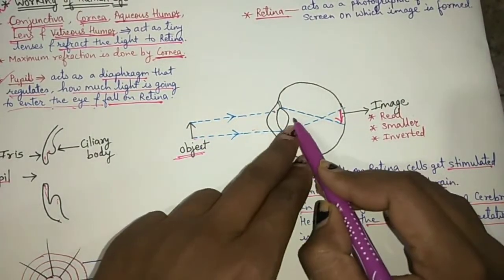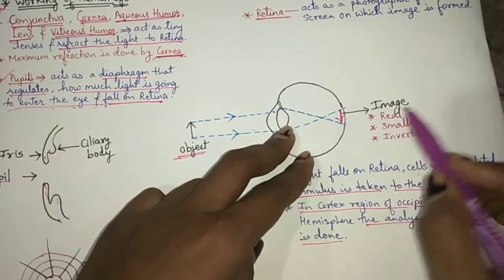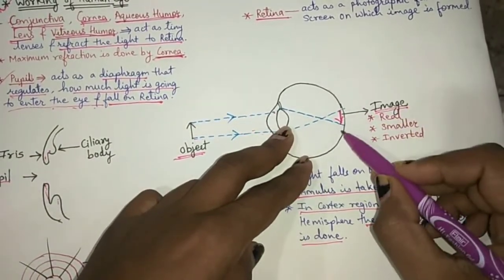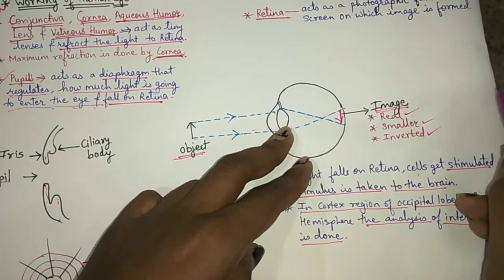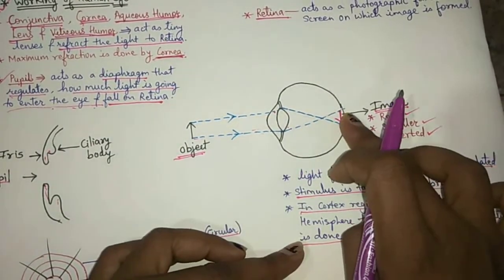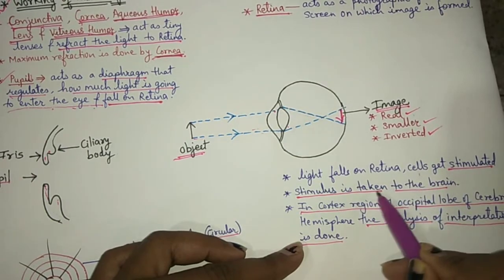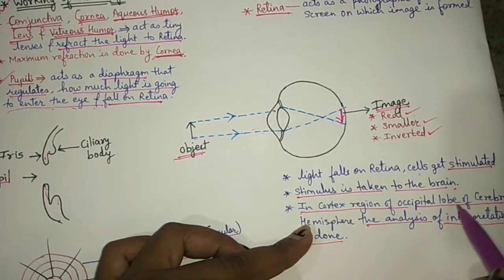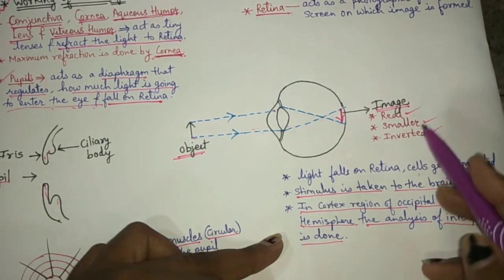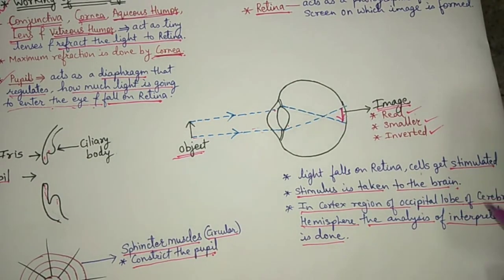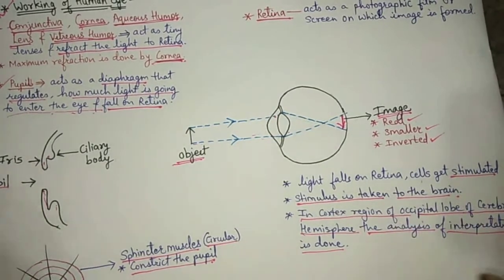The image formed on the retina is a real image, but it is smaller and inverted. The rod and cone cells get stimulated by the light falling on the retina, and this stimulus is taken to the occipital lobe of the cerebral hemisphere, where the analysis and interpretation of the image formed on the retina allows us to see things properly.